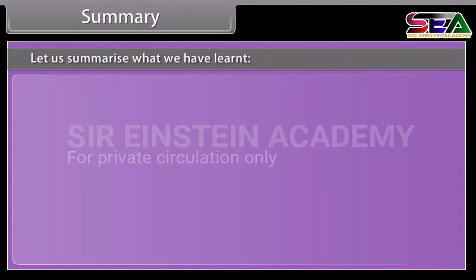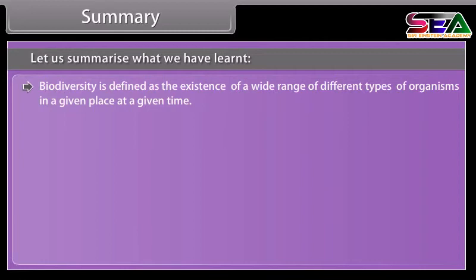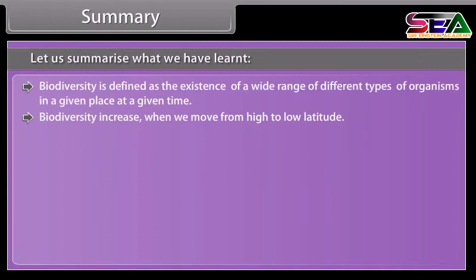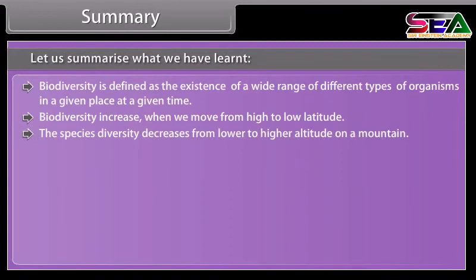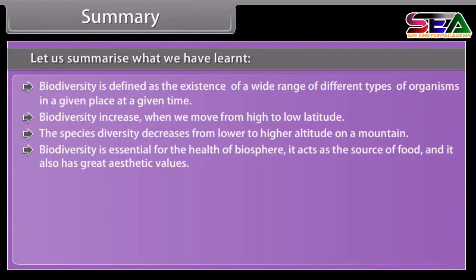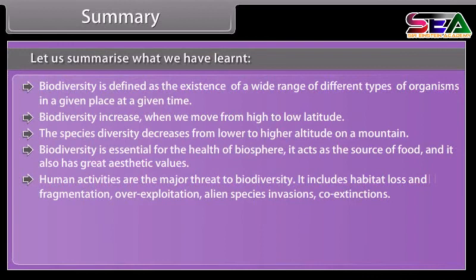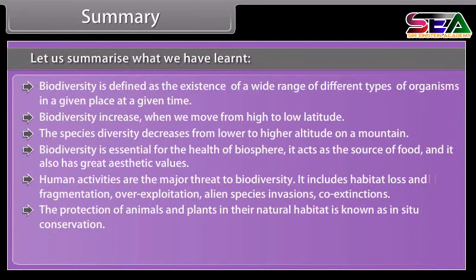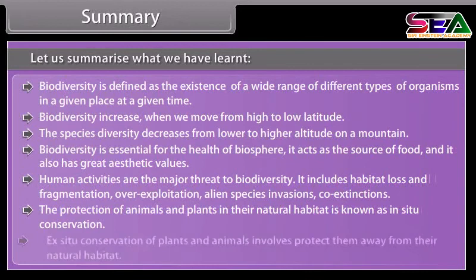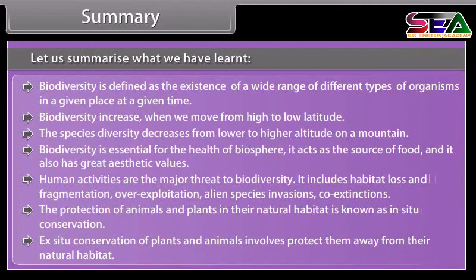Summary. Biodiversity is defined as the existence of a wide range of different types of organisms in a given place at a given time. Biodiversity increases when we move from high to low latitude, and species diversity decreases from lower to higher altitude on a mountain. Biodiversity is essential for the health of the biosphere and acts as the source of food with great aesthetic values. Human activities are the major threat to biodiversity, including habitat loss and fragmentation, over-exploitation, alien species invasions, and co-extinctions. The protection of animals and plants in their natural habitat is known as in-situ conservation, while ex-situ conservation involves protecting them away from their natural habitat.